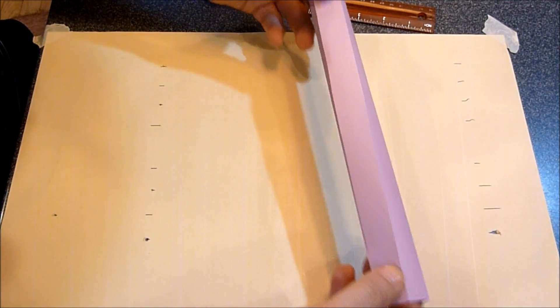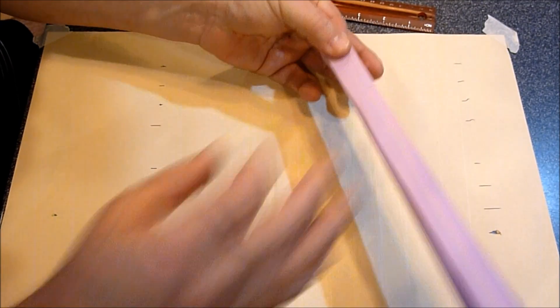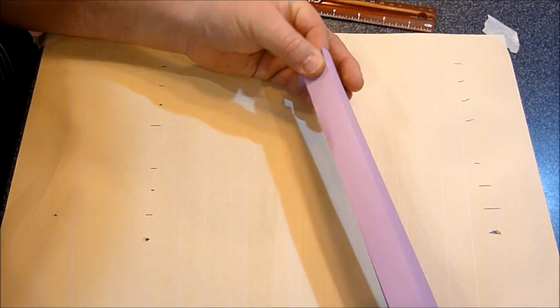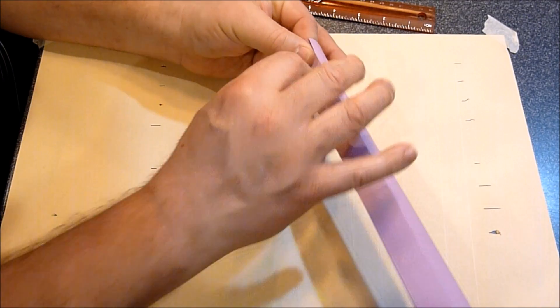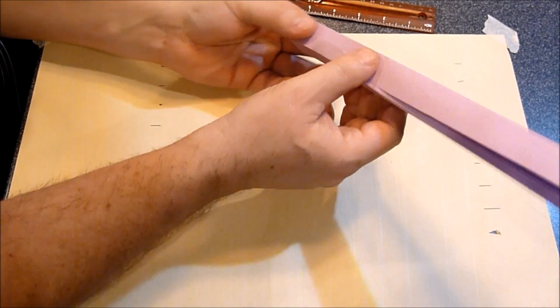Once you have the overlap, you just hold it in place with one hand, take a piece of tape, and just tape it shut.